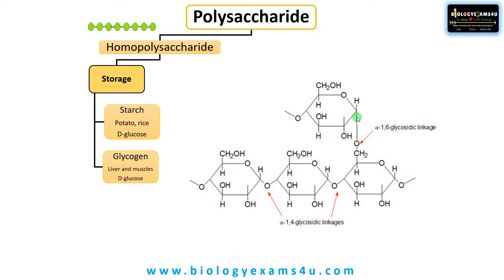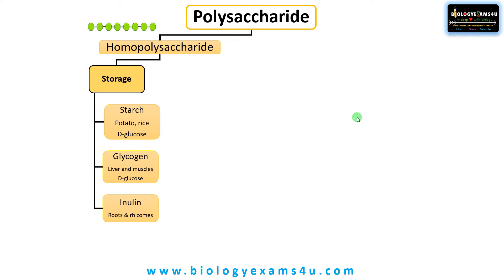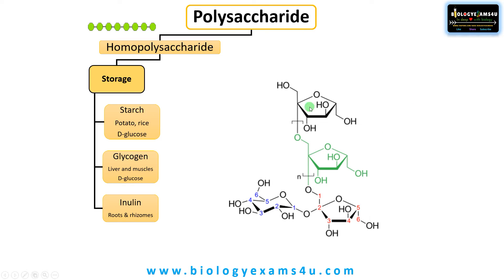The third storage homopolysaccharide is inulin, which is made up of fructose monomers — specifically 5-carbon fructose, a pentose sugar — linked by beta-2,1 glycosidic bonds. It is not easily digested by humans, so it acts as a dietary fiber, but it is a favorite food for gut bacteria, thus indirectly promoting gut health. It is widely present in roots and rhizomes of bananas, onion, chicory root, etc.